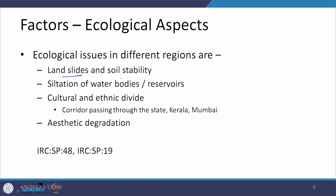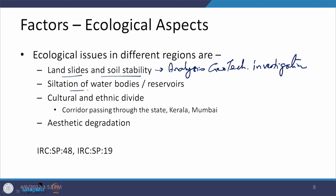I have talked about landslides and soil stability — a big analysis needs to be done in this area, and geotechnical investigation will be required. Siltation of water bodies and reservoirs also happens if you are constructing a road and without understanding, you take out material in terms of cut and put it towards the valley side where it goes into the water body. It then flows towards the location where a dam is constructed and silts it there, which creates a problem.